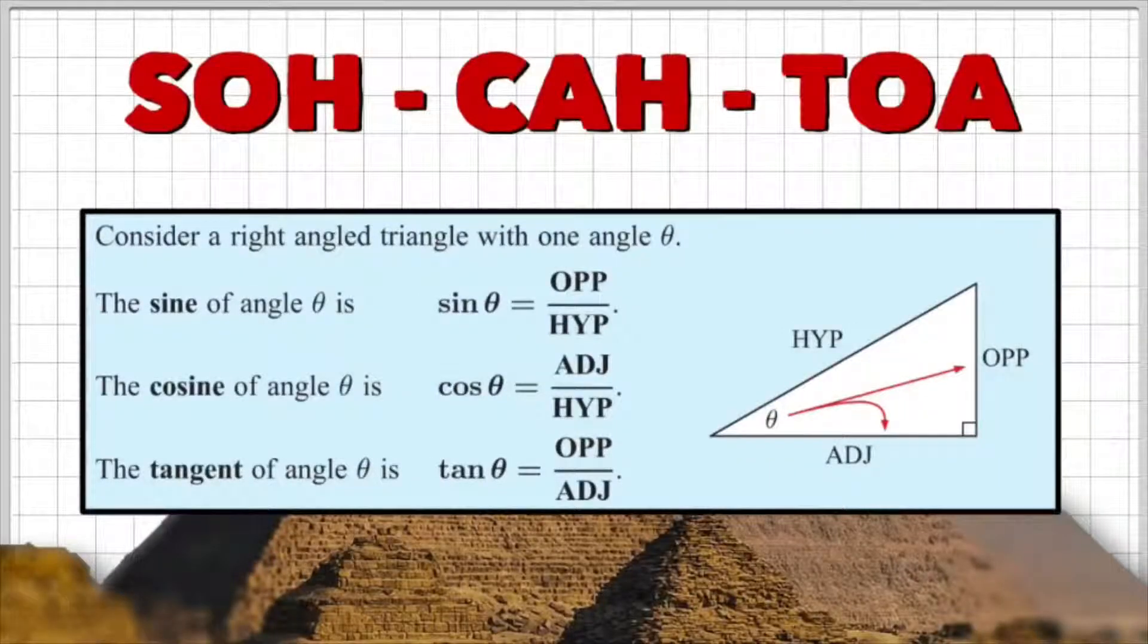So a quick recap from the previous video, we introduced the acronym SOH-CAH-TOA to represent the three trig ratios for sine, cosine and tangent of a right angle triangle. We're going to be using this to solve some application problems using trig.